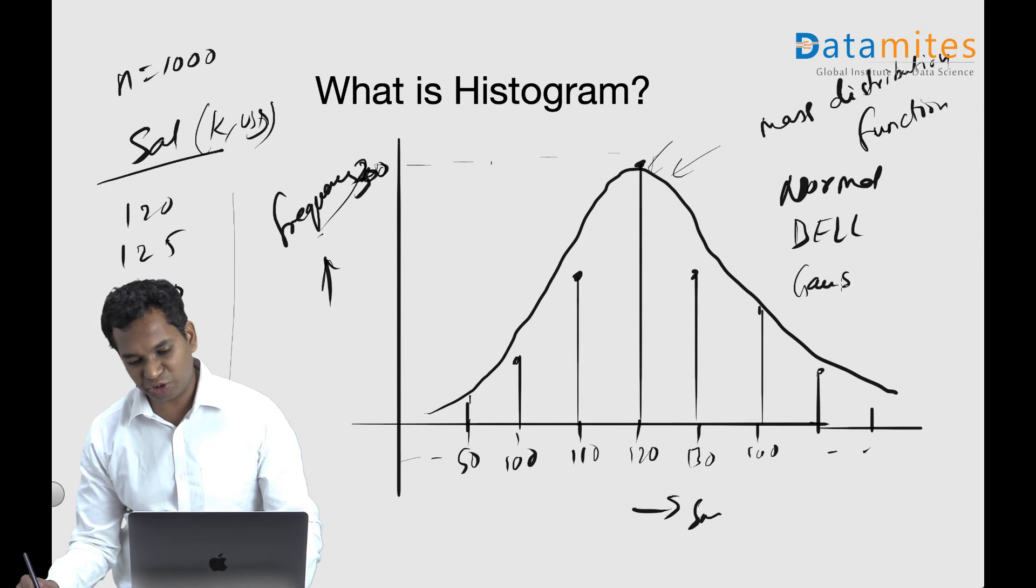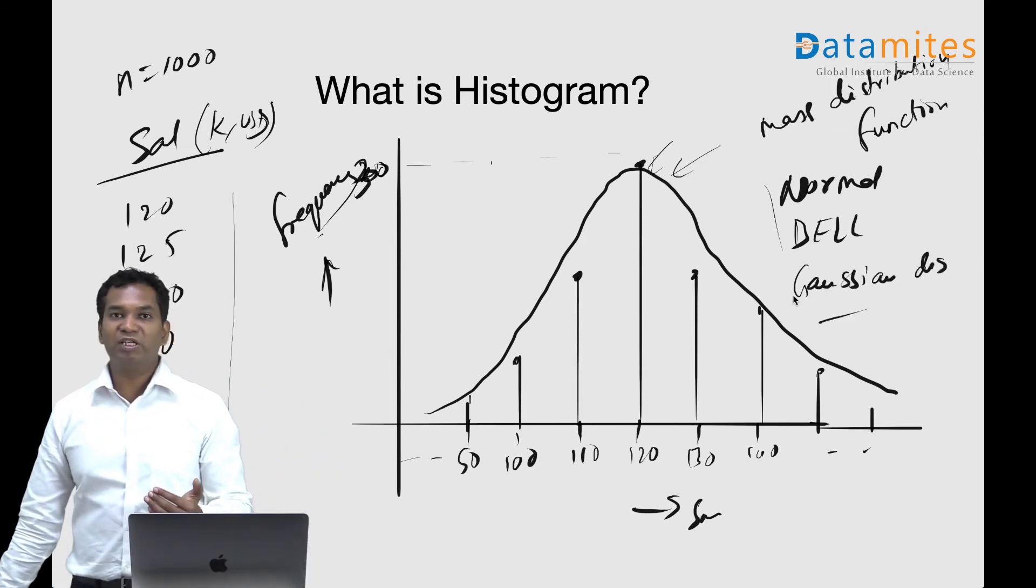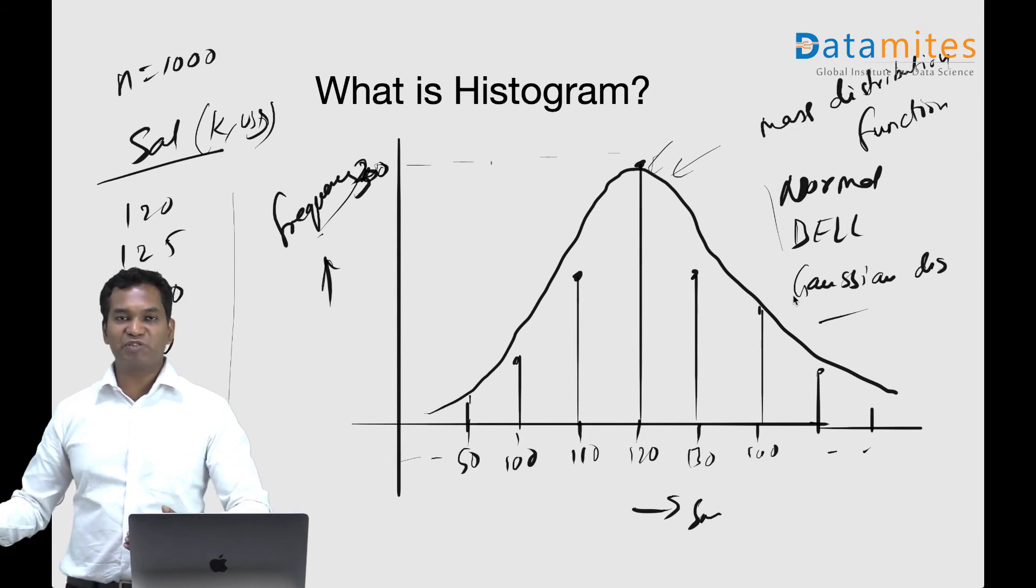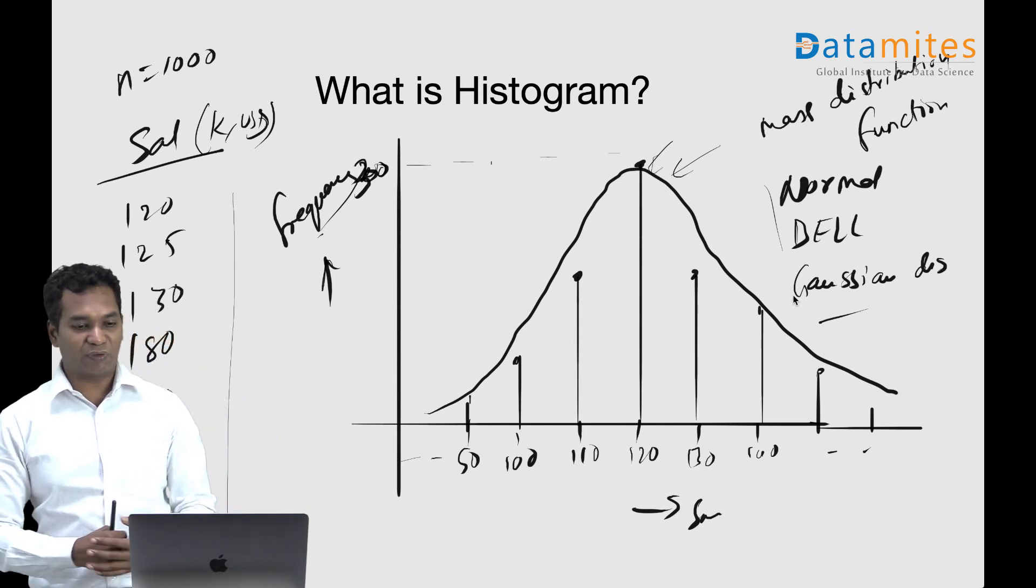Or it's technically called Gaussian distribution. By looking at the histogram, we can identify different types of distributions which are categorized by the histogram's shape.